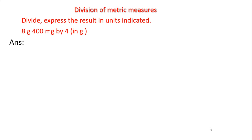8 grams 400 milligrams by 4, express the quotient in grams. So first we will write the metric measure as it is, then we will convert this metric measure to grams so that we can express the quotient directly in grams.